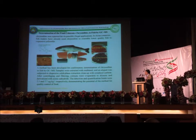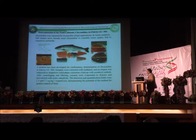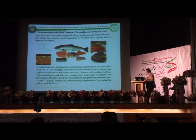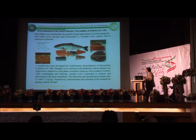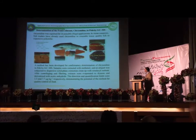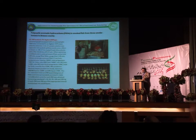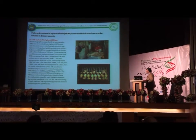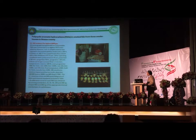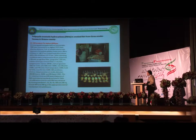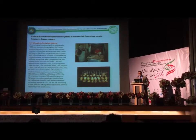We can also use GC-MS to find certain color compounds in fish tissue, which are very dangerous for humans and can be detected by GC-MS. Additionally, there are many polycyclic aromatic hydrocarbons found in smoked fish, which are very dangerous for humans, and we can analyze these compounds by GC-MS.